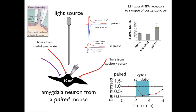And this is indeed the finding. The ratio of AMPA to NMDA current is about two in naive mice — mice that have never experienced any kind of pairing — and in unpaired mice. Whereas in paired mice, the ratio of AMPA to NMDA currents is more than double that of the unpaired, just a little more than four.